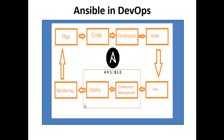Infrastructure as code is the process of managing and provisioning computing infrastructure — bare metal servers, virtual servers, etc. — and their configuration through machine-processable definition files, rather than physical hardware configuration or interactive configuration tools. This is where Ansible automation plays a major role. In DevOps, sysadmins work tightly with developers, development velocity is improved, and more time is spent on performance tuning, experimenting, and getting things done, and less time fixing problems.